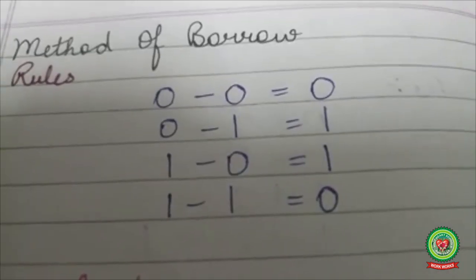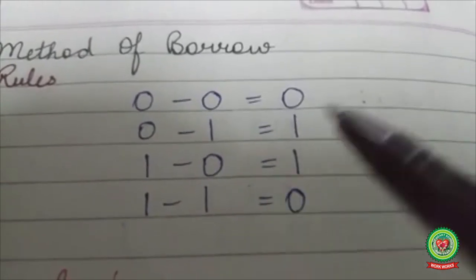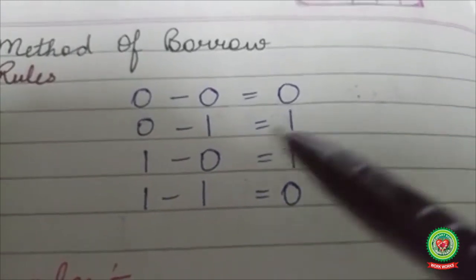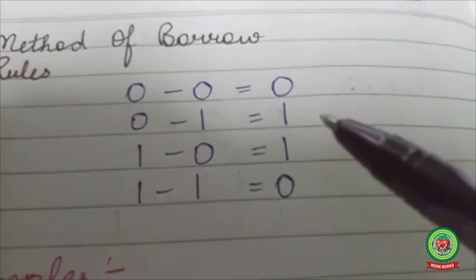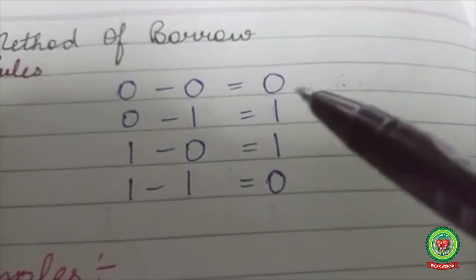The rules of binary subtraction are: 0 minus 0 is 0, 0 minus 1 is 1 as borrow from the next digit, 1 minus 0 is 1, 1 minus 1 is 0.